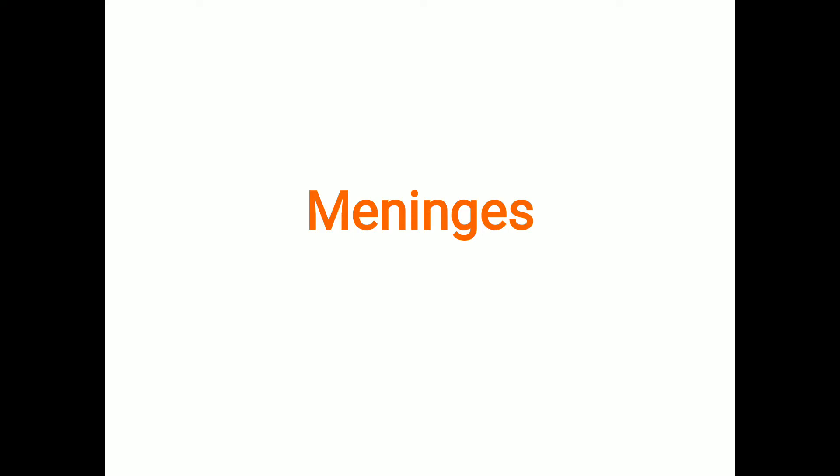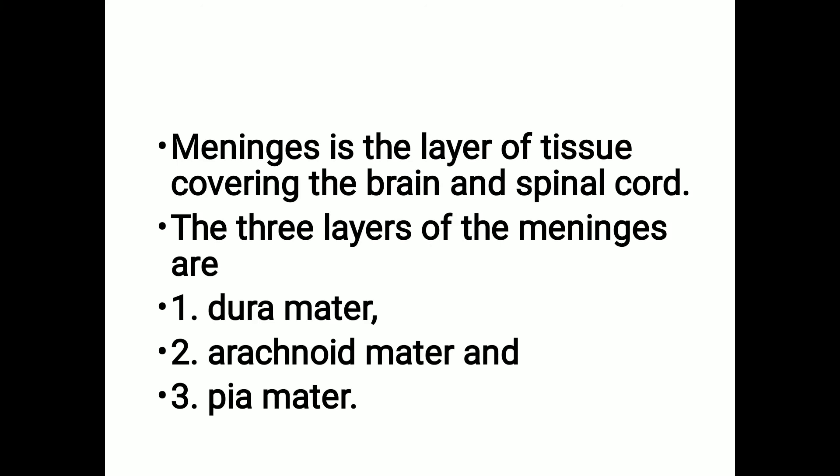Let's discuss meninges. Meninges is the layer of tissue covering the brain and the spinal cord. The brain and spinal cord are covered by layers of tissue called meninges, and there are three layers of tissues.